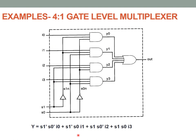Let us identify the inputs, outputs, and nets available. The lines coming out of the dotted box are the main port signals: S1, S0, I3, I2, I1, I0 as inputs, and OUT as the output port. Internally, connections between hardware elements are nets declared using the keyword wire. We have wires Y0, Y1, Y2, Y3, and also S1N and S0N representing the complements of S1 and S0. Totally we have six wires to declare.